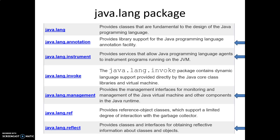Along with that we have a package called java.lang, in which we have java.lang.annotation which provides library support for the Java programming language annotation facility. Then java.lang.instrument provides the Java programming language to work with the JVM. Then java.lang.management works for managing interfaces for monitoring the JVM during runtime. Then java.reflect provides the classes and interfaces for obtaining reflective information. So in this java.lang package we come across java.lang.annotation.